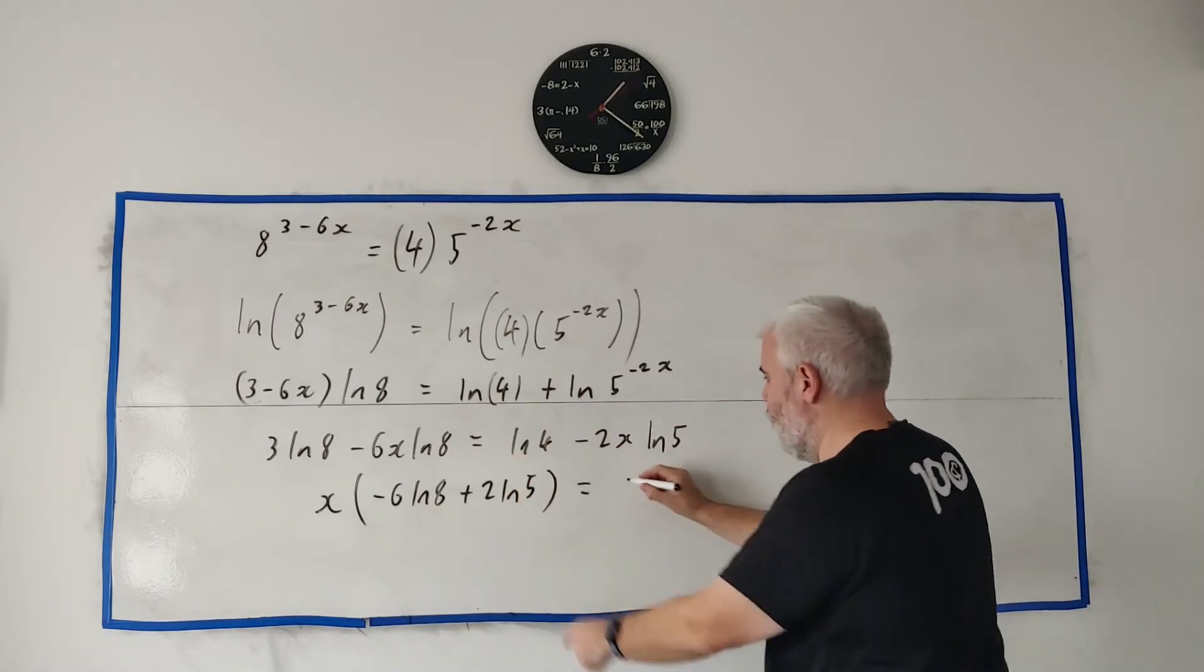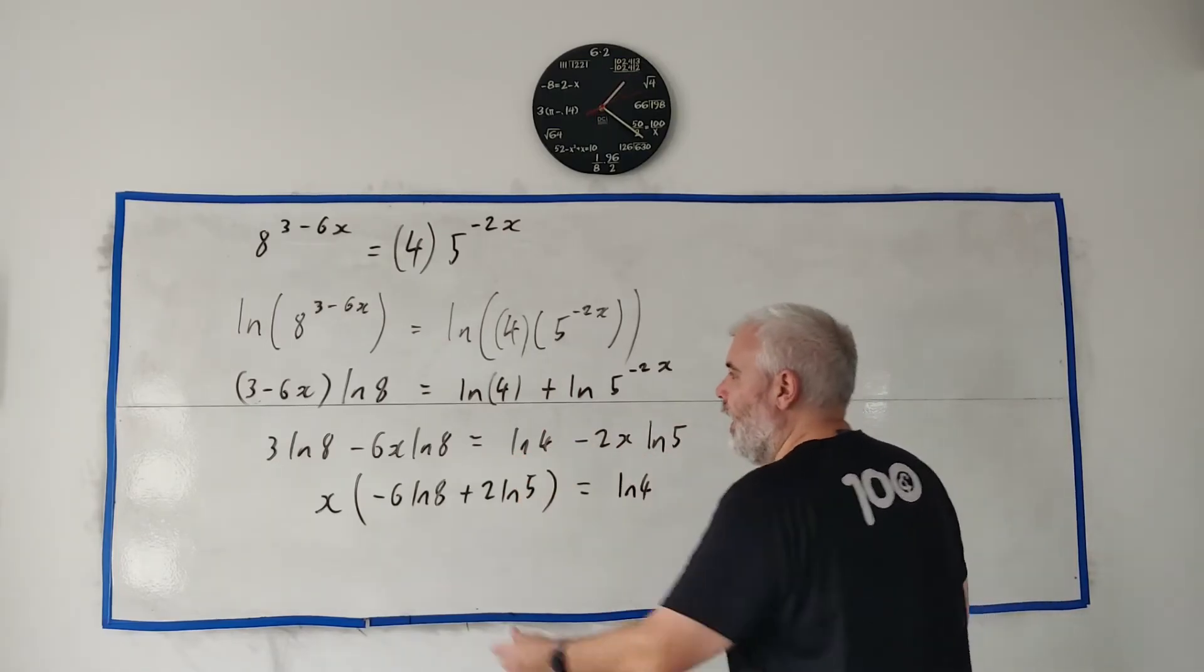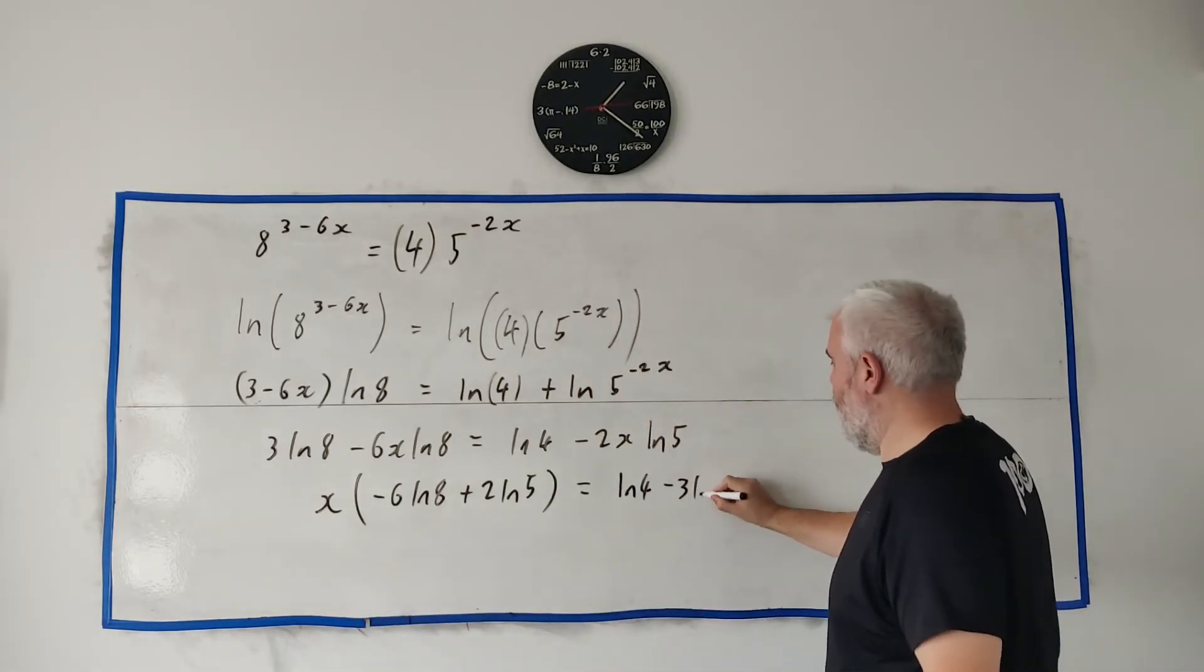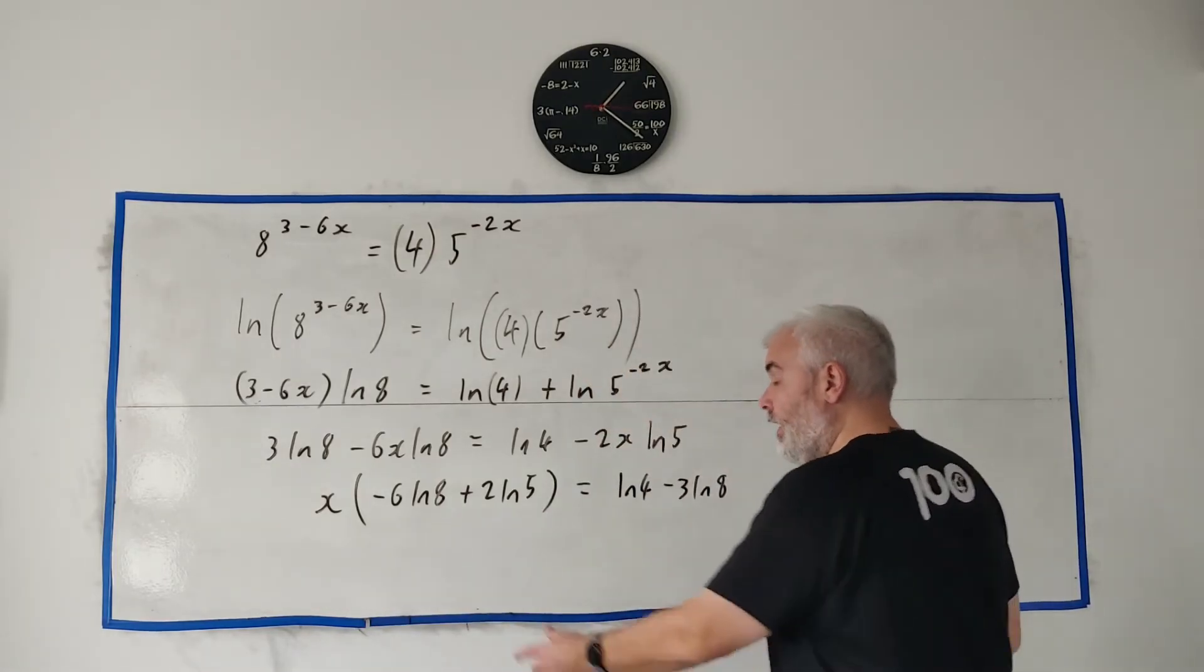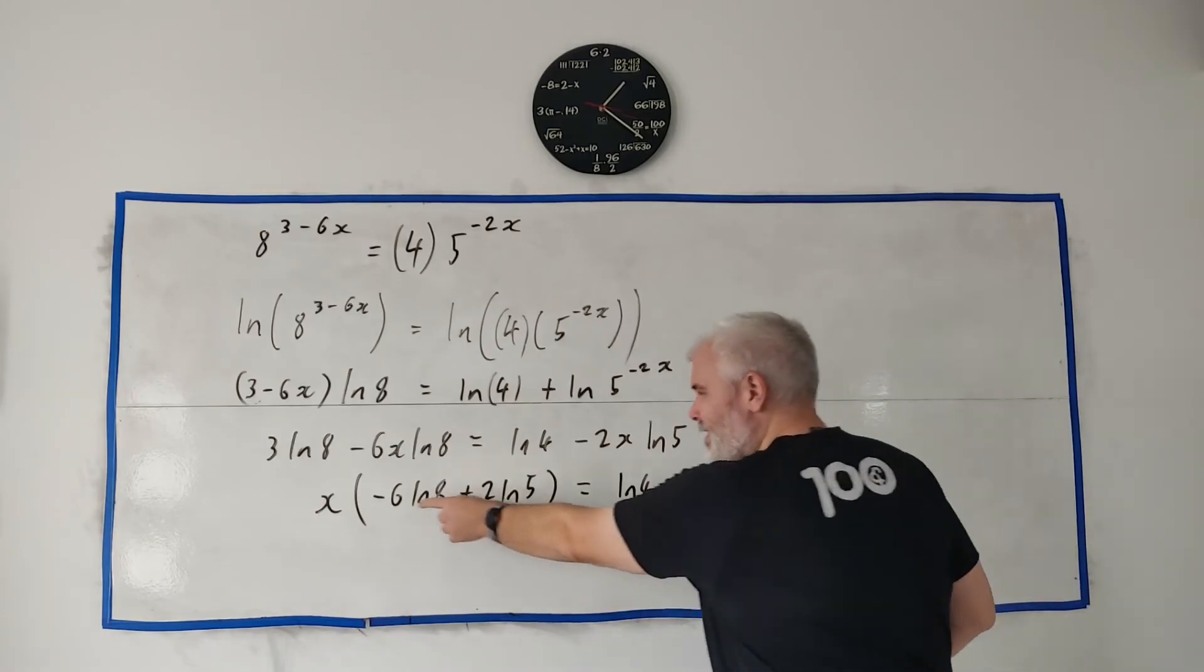We'll move everything else over the right. Natural log 4 stays here and this guy will move over and be minus 3 natural log 8. And then we just divide both sides.